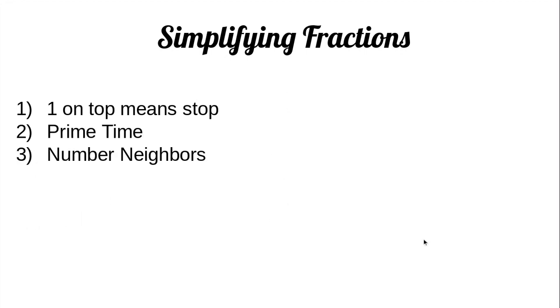Let's look at an example. So I have 14 over 21. Doesn't have a one on top. The bottom number is not prime and they are not number neighbors. So I have to think what number could it simplify by.